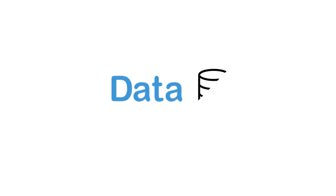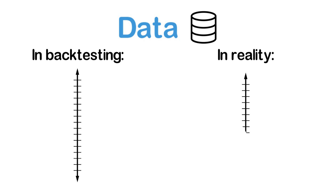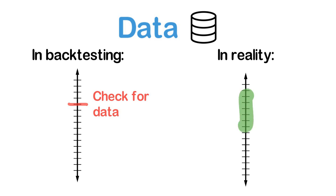Another important difference between backtesting and live trading lies in how your algorithm receives data. When backtesting, you will usually use QuantConnect's data feed, which gives your algorithm standardized data at a very specific point in time. However, when trading based on live data, you cannot always decide at what exact time you receive the data. Especially for custom or alternative data, you need to be aware that you can only use the data once it is available, which might not always be at the same time. Therefore, it often makes more sense to check for new data over a span of time instead of at one particular time like you would in backtesting.